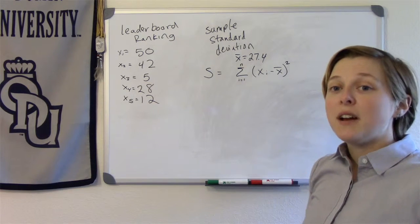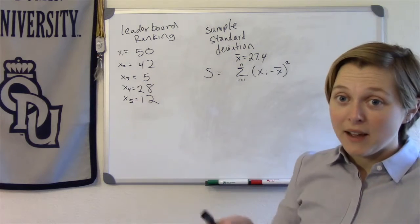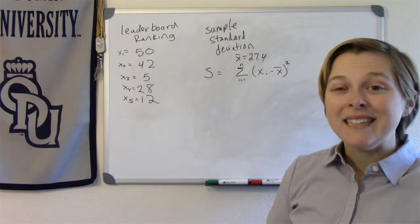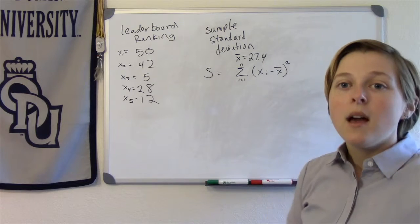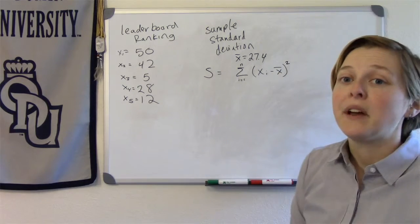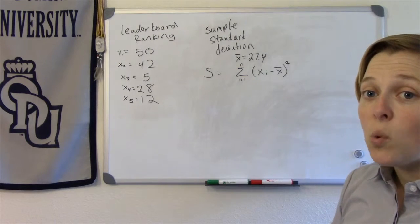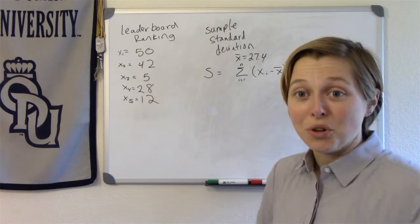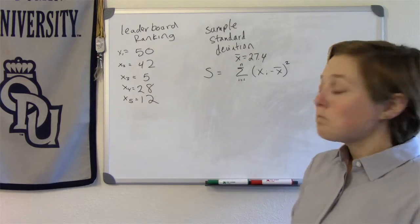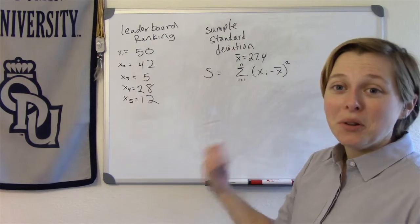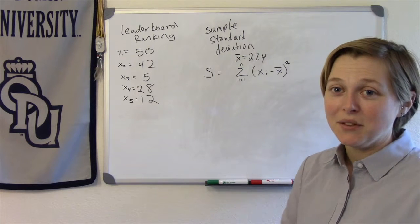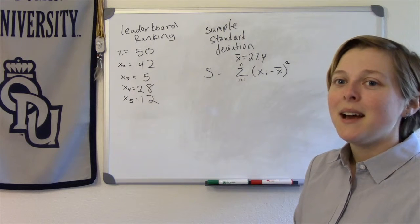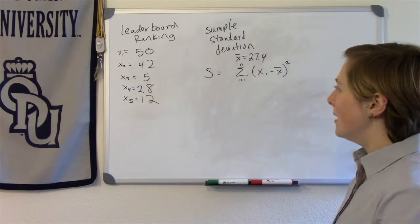There are other measures of variation that use absolute value that is beyond the scope of this class, and we're not going to talk about those measures of variation. Basically it's the same thing, except you use it as absolute value. Now using the square has really awesome cool properties, which if you further your study in statistics, you'll learn more about those properties. This is the best measure of variability because of those properties. So we tend to use the square because it's the best measure of variability due to some theoretical properties.